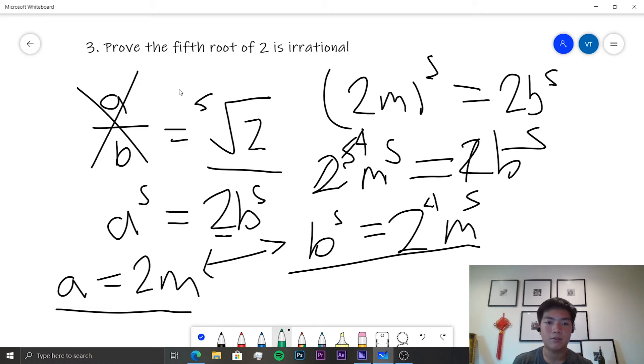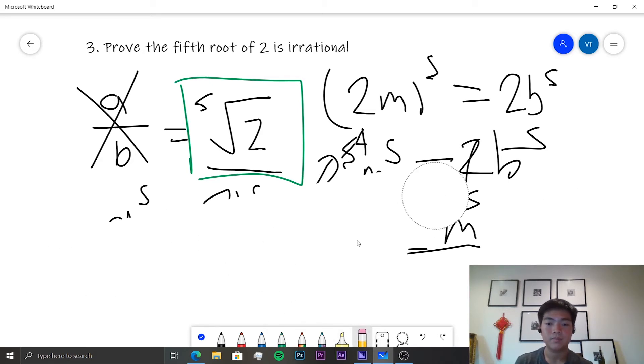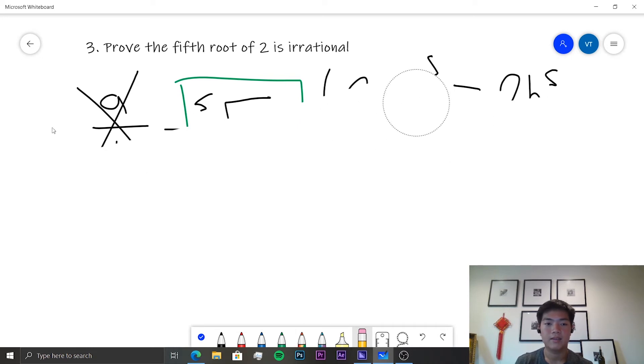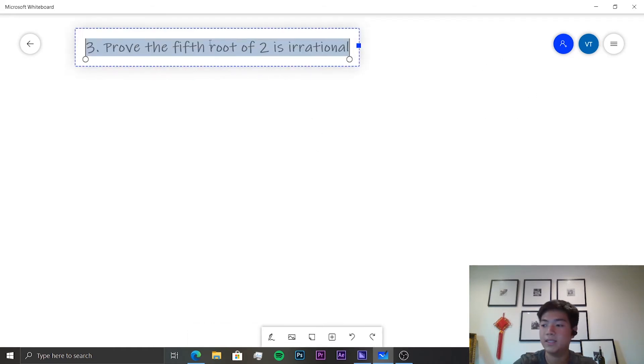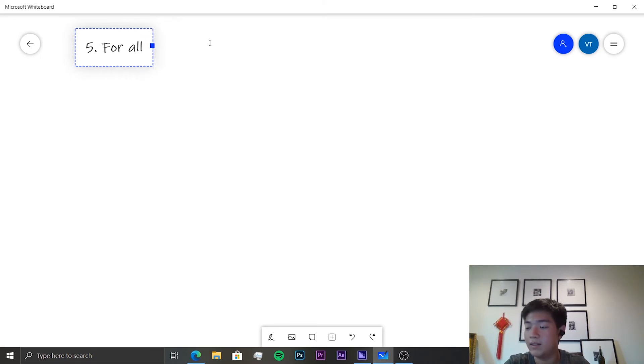And therefore, the fifth root of 2 is irrational. Okay, let's move on to the next problem. The next problem is for all a, b, which are integers, 12a squared minus 6b squared is not equal to 0.